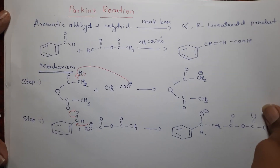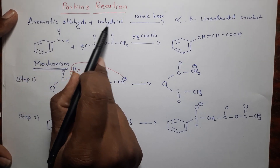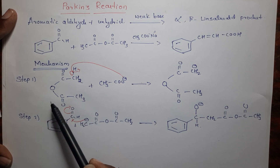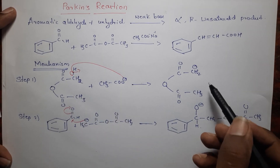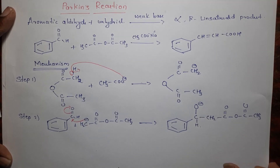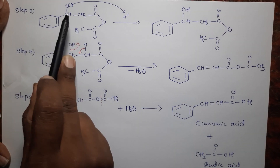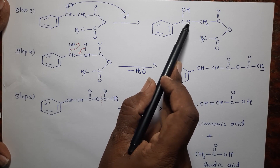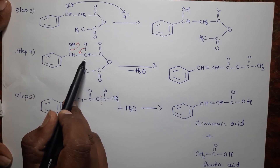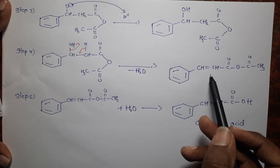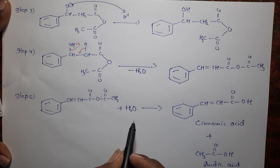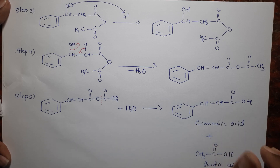In summary, in Perkins reaction, aromatic aldehyde is reacted with anhydride in presence of a weak base to give an alpha-beta unsaturated product. In step 1, the anhydride reacts with base to form a carbanion. In step 2, the carbanion attacks the carbonyl carbon and oxygen gets a negative charge. In step 3, the negatively charged oxygen abstracts a proton to form an alcoholic functional group. In step 4, dehydration removes one water molecule to form the alpha-beta unsaturated product. In step 5, the molecule undergoes hydrolysis to give the final product — cinnamic acid.